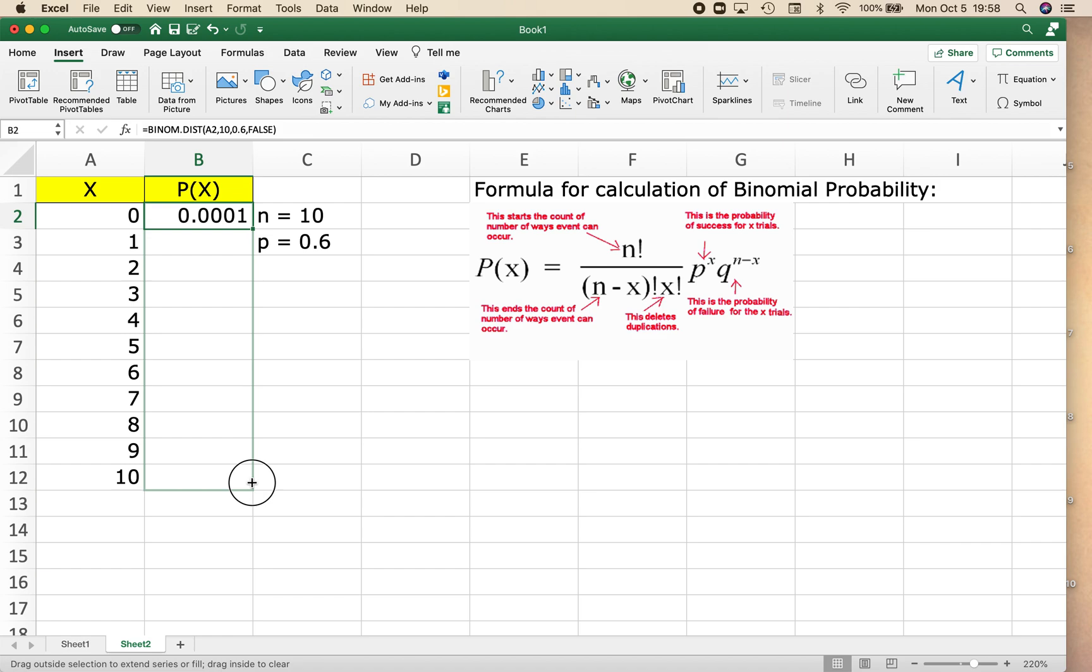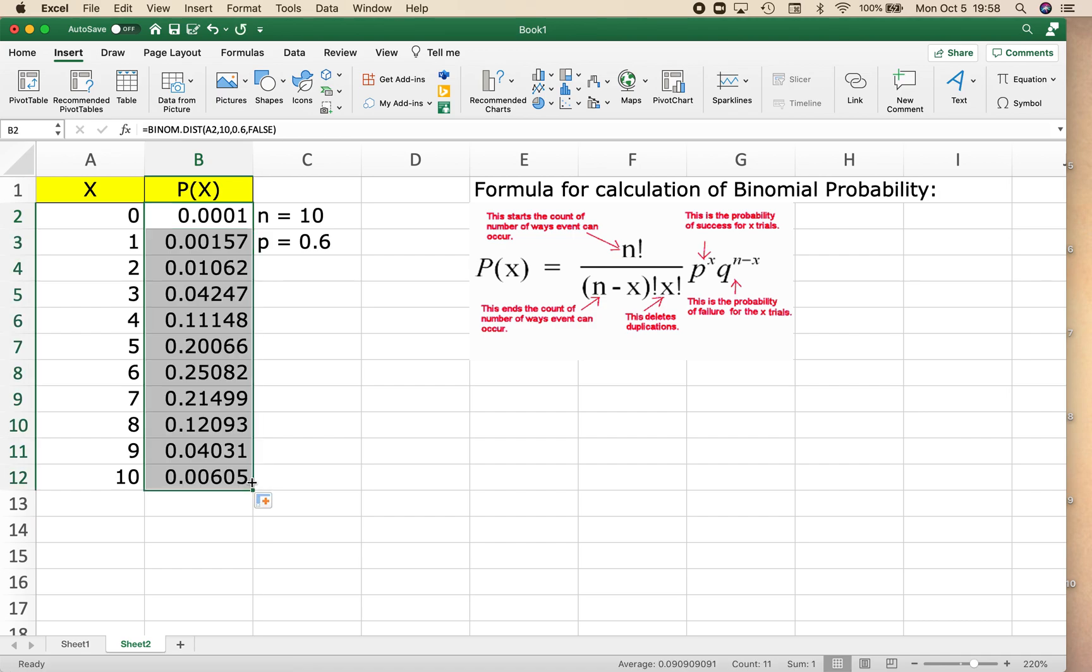When I release my cursor, it is going to fill in the probabilities for each x value using the formula off to the right. Boom.